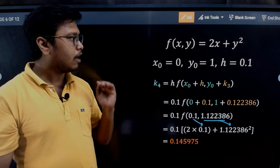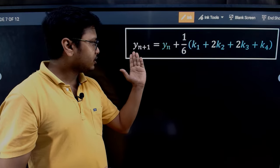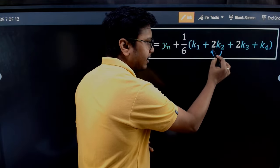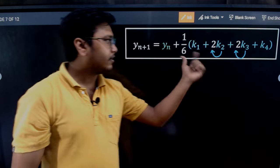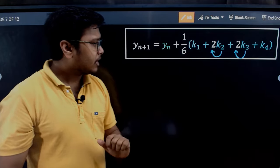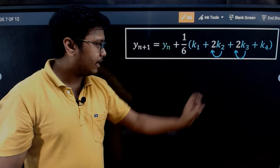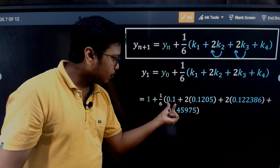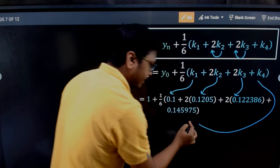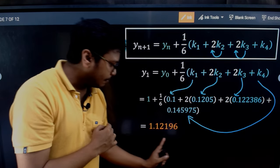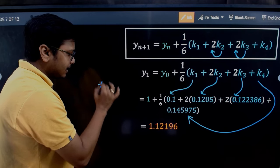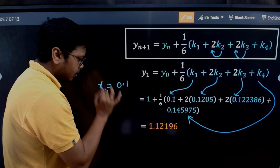With k1 through k4 found, we apply the main RK4 formula: y_{n+1} = y_n + (1/6)(k1 + 2·k2 + 2·k3 + k4). Note the coefficients: k2 and k3 each have coefficient 2, while k1 and k4 have coefficient 1, summing to 6. Plugging in all values — k1 = 0.1, and the computed k2, k3, k4 — gives us the value of y1.